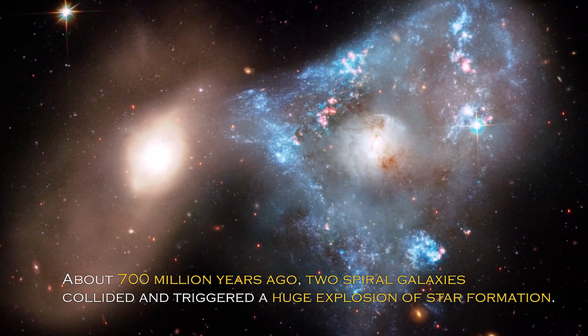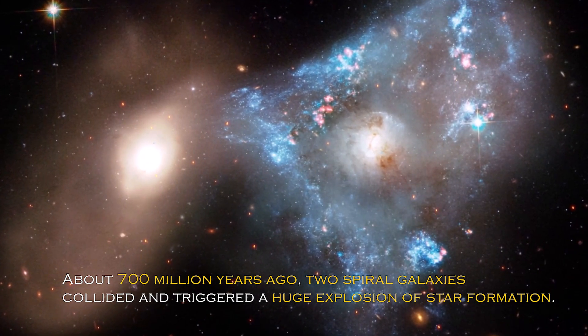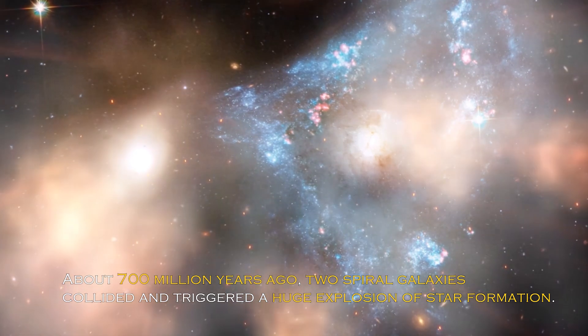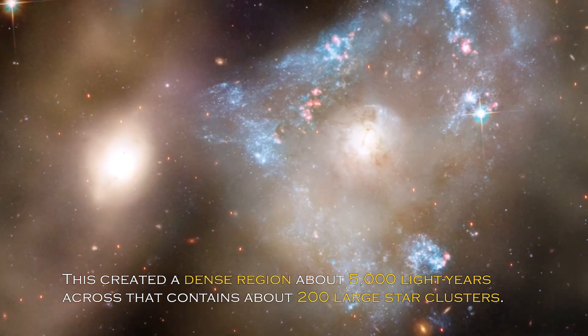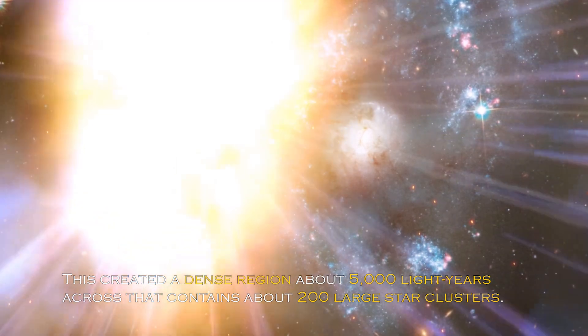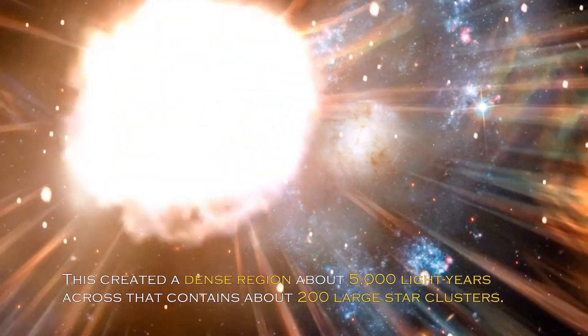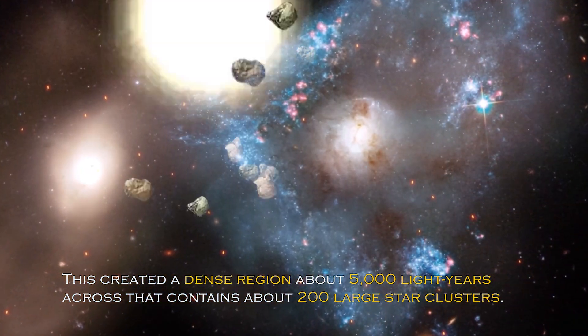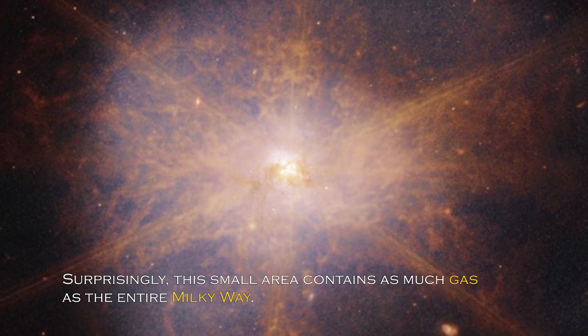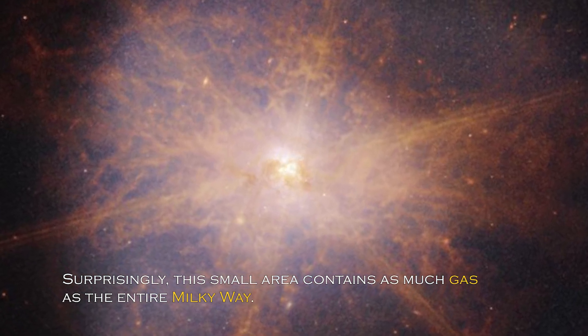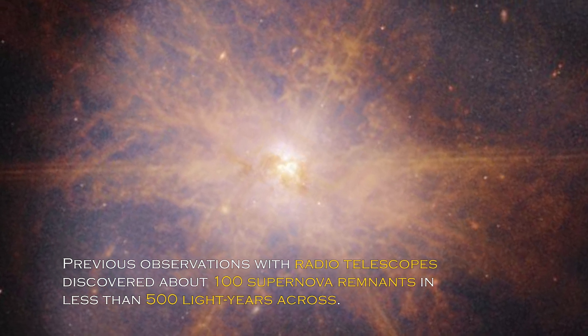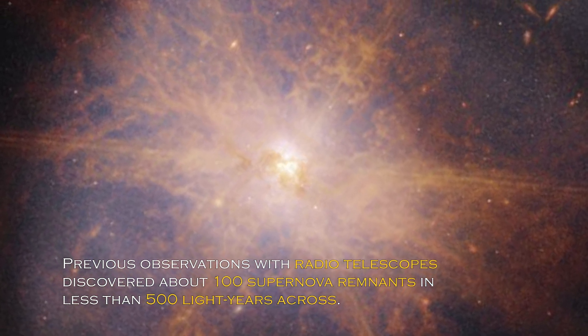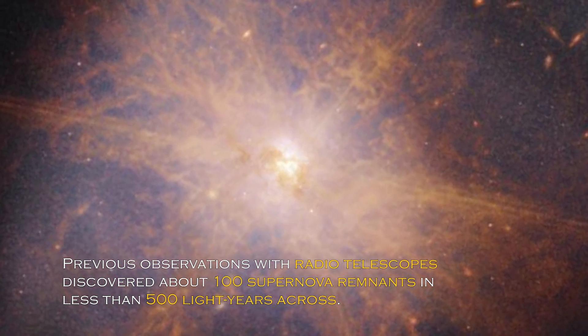About 700 million years ago, two spiral galaxies collided and triggered a huge explosion of star formation. This created a dense region about 5,000 light-years across that contains about 200 large star clusters. Surprisingly, this small area contains as much gas as the entire Milky Way. Previous observations with radio telescopes discovered about 100 supernova remnants in less than 500 light-years across.